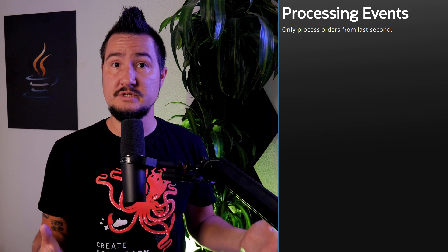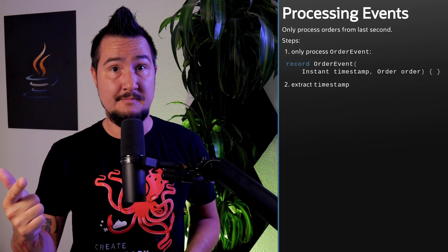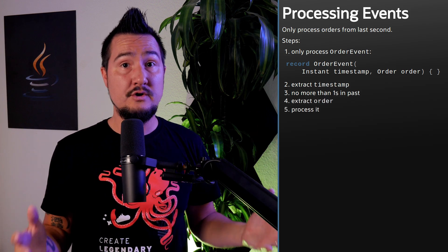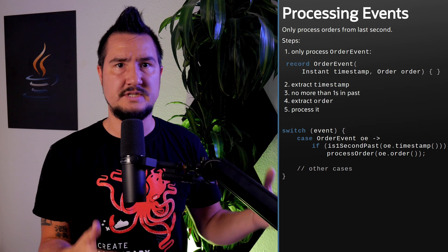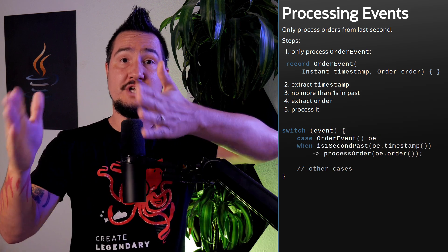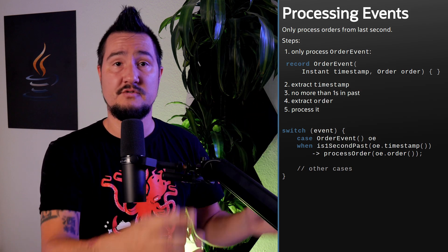So far, we can only use type patterns in Switch, as a preview, as I explained in episode 24. For example, if you switch over an event and only want to process orders from the last second, you'd want to check that the event is an order event, extract its timestamp, check whether that's no more than one second in the past, and if so, extract the order and process it. But type patterns only allow you to do the first check with 'case OrderEvent OE' on the left side, leaving an if to check the timestamp with a method like isOneSecondPast, and more extraction for the right side. When clauses allow you to check the timestamp with 'case OrderEvent OE when isOneSecondPast(OE.timestamp)', but still leave more extraction to the right side. And this is where deconstruction patterns come in handy, because with them it is much easier to access the required components of the object.